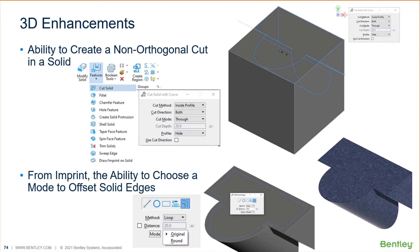We've also added a tool for imprinting. We've always had imprinting for a while, but the big difference here is we can choose a mode to offset the edges of it. Kind of like the copy parallel tool, we have an option to use the mode as 'original,' which does a sharp corner, or we can set that to 'round,' where we get a nice rounded corner. A good example is right here on the edge, where you have a nice round that goes around the corner — because the mode is set to round.